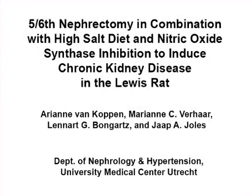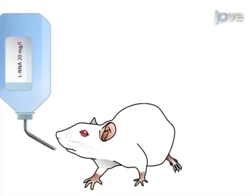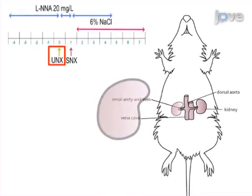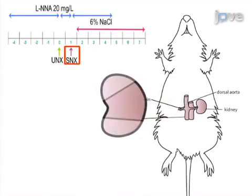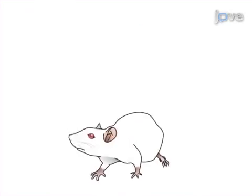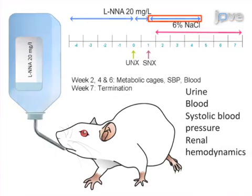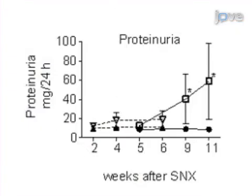The overall goal of this procedure is to induce chronic kidney disease in the Lewis rat. This is accomplished by first administering the nitric oxide blocker NG-nitro-L-arginine, or LNNA, for a period of four weeks. Next, the entire right kidney is removed, then one week later two-thirds of the left kidney is removed. Finally, while being treated with LNNA and a high salt diet, the development of renal failure in the rat is followed over time.